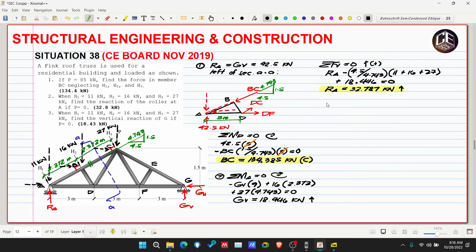The positive result confirms our assumed direction for RA is correct - upward. Next, problem three: when H1 is 11, H2 is 16, H3 is 27, find the vertical reaction at G if P equals zero. We already got GB - it's 18.446 kilonewtons. We got two birds with one stone!